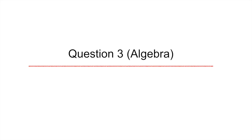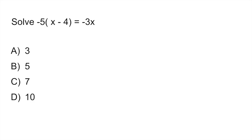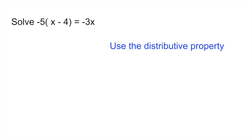Question three is an algebra problem. I like to always throw one of these in because you have to be really good with these equalities and inequalities. So here it says solve -5(x - 4) = -3x. To do this problem the first thing you want to do is use the distributive property. That means you're going to take that -5 and multiply it by each of the terms inside your parentheses.